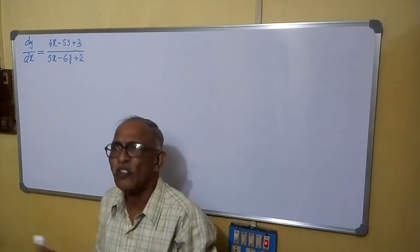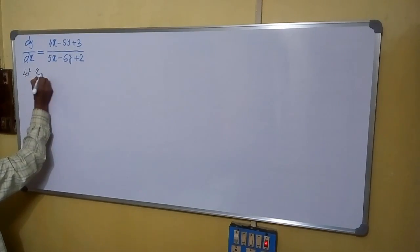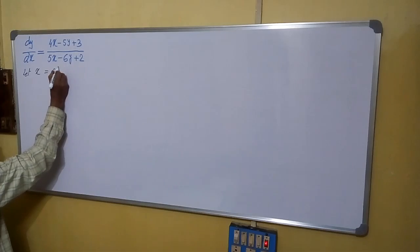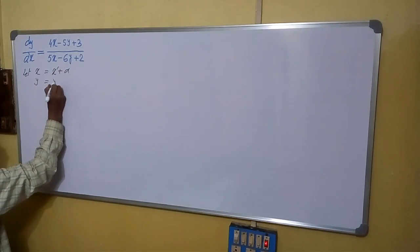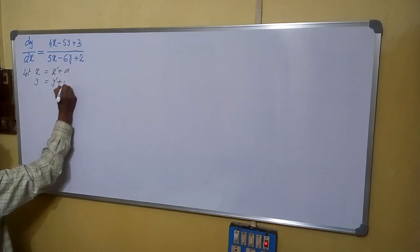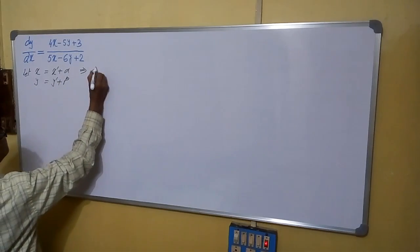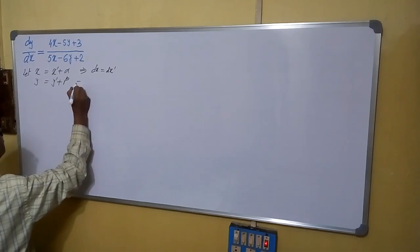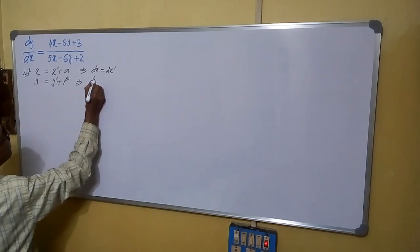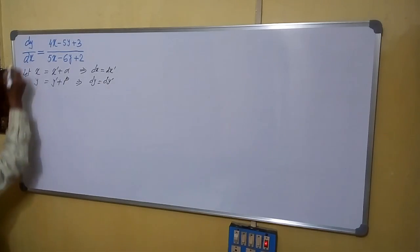Try to follow this method. Let x equals to x dash plus alpha, y equals to y dash plus beta. Then from here we can write dx equals to dx dash, and dy equals to dy dash.